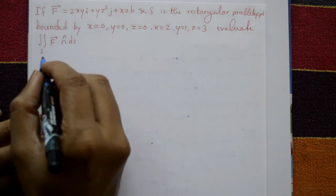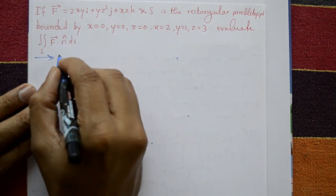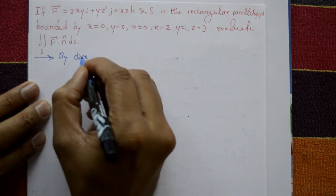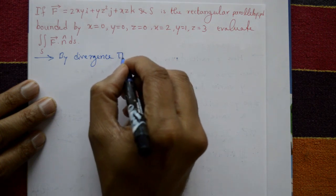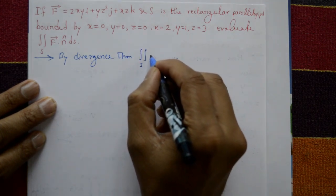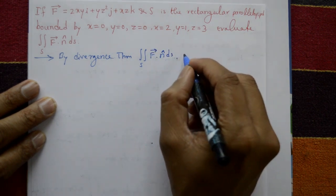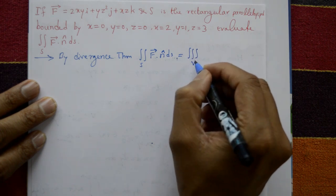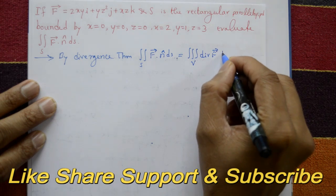The solution is to evaluate this using the divergence theorem. The divergence theorem states that the surface integral over S of F dot n-cap dS is equal to the triple volume integral of divergence of F dV.